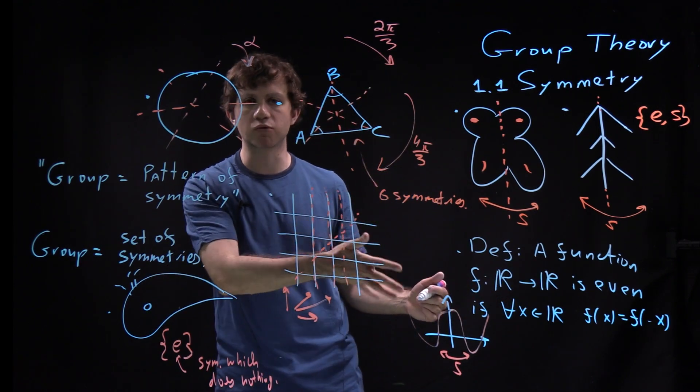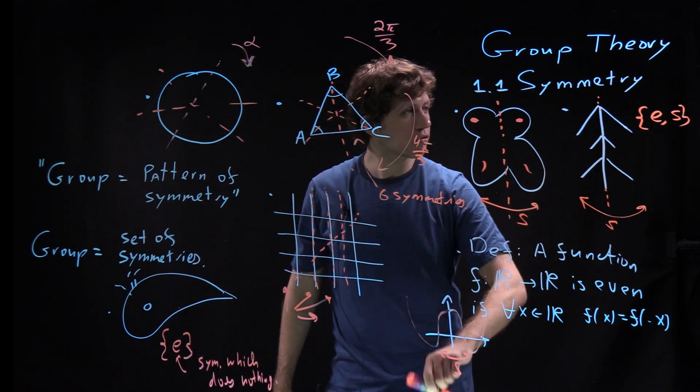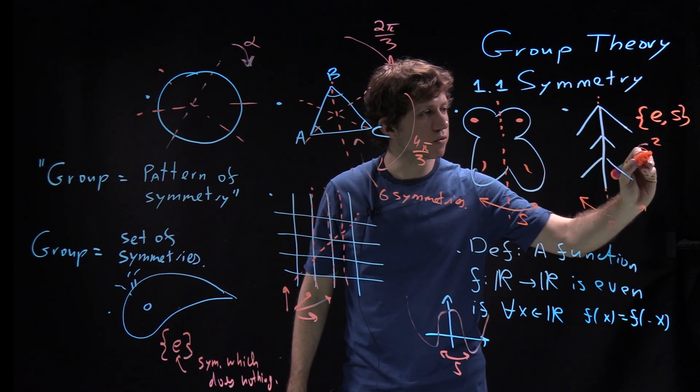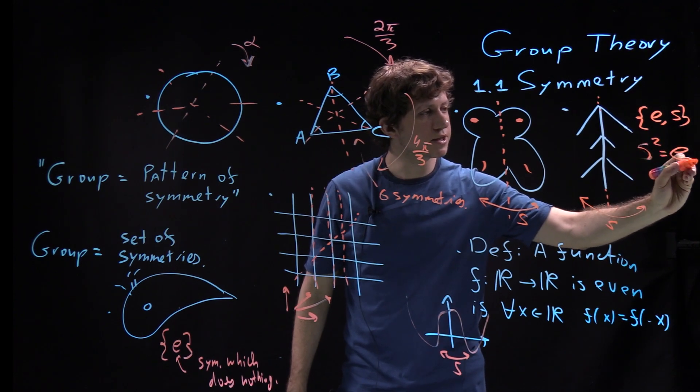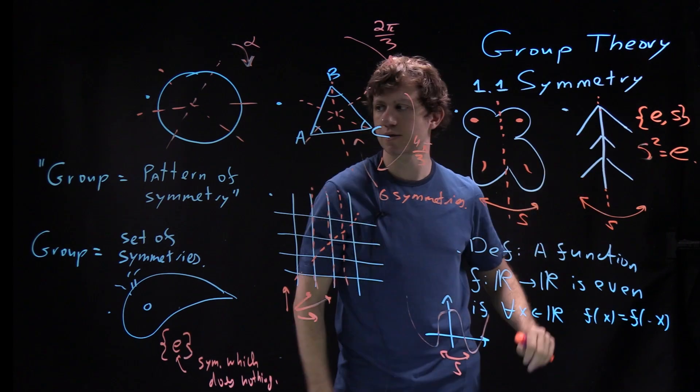And this will be called multiplication of symmetries. And usually in reality it will correspond to composition of maps. In this example, for instance, you can do S twice. It will be called S squared. And you get E back. So you do flip, you do another flip, and everything stays at rest.